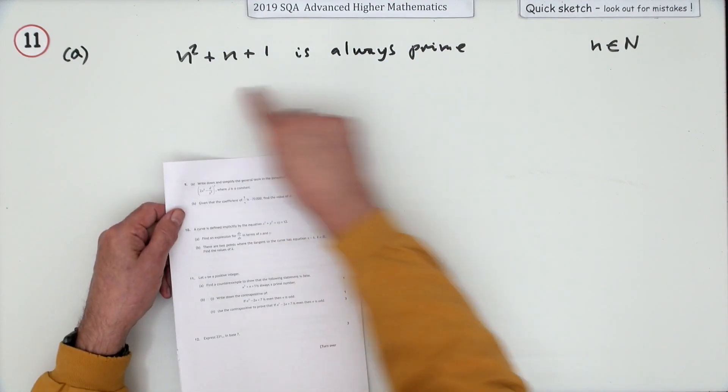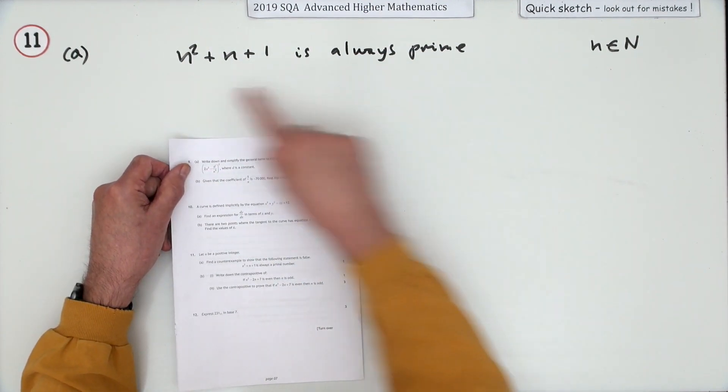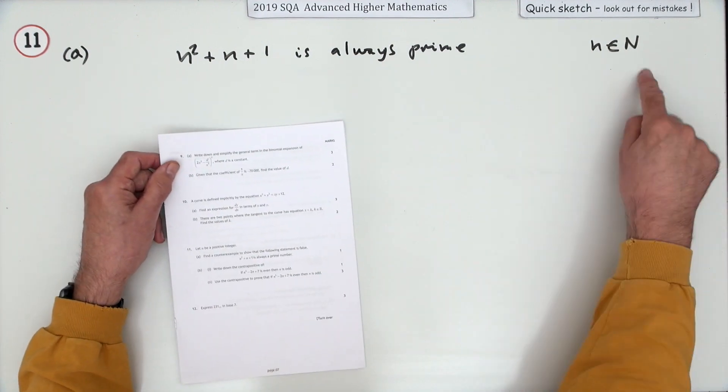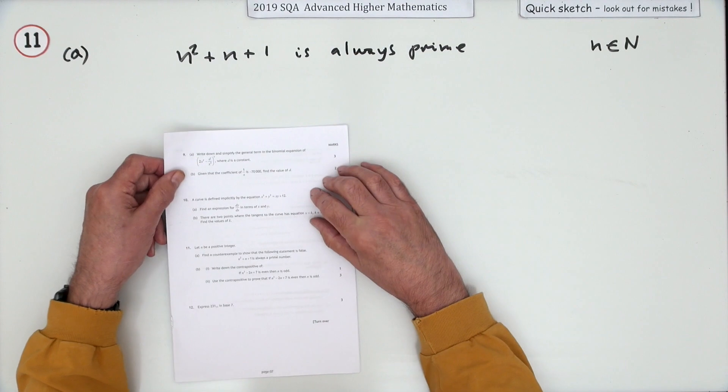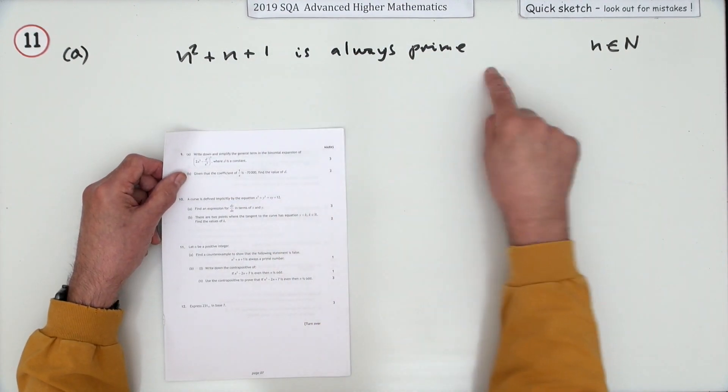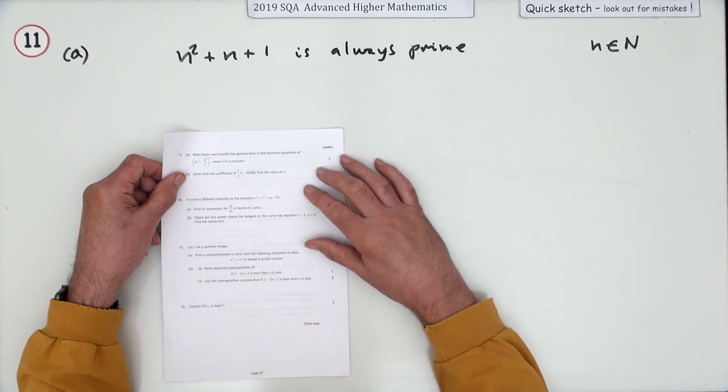Here it's telling you that this first one is actually false. You're given the statement: n²+n+1 is always prime if n is a natural number, if n is a positive integer. They want you to find a counterexample that disproves that, because it only takes one counterexample to disprove something.